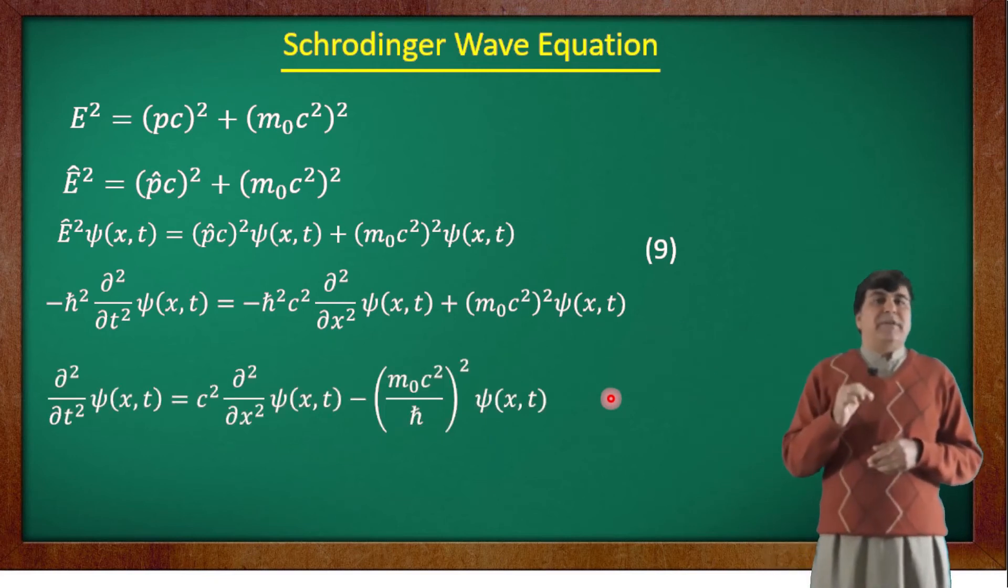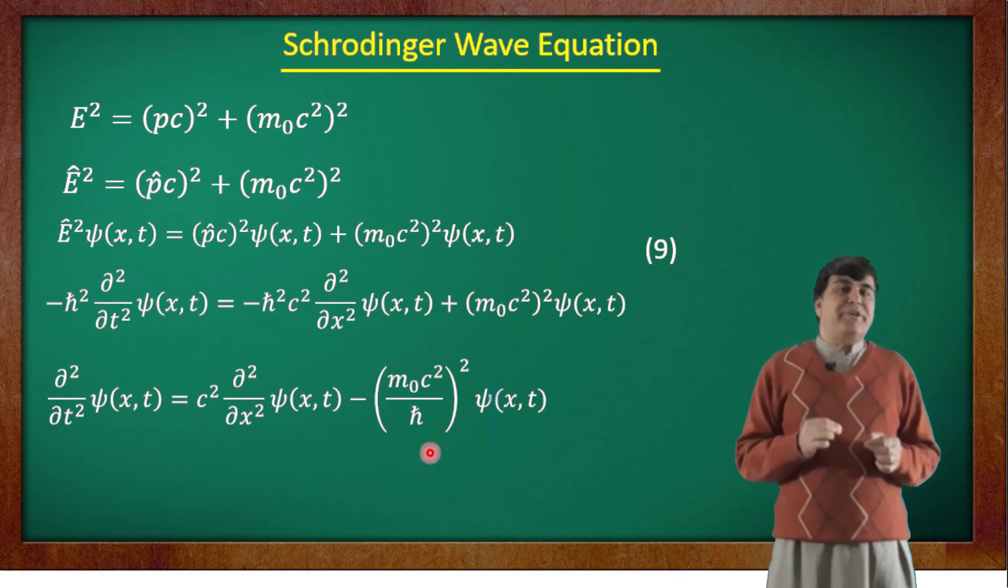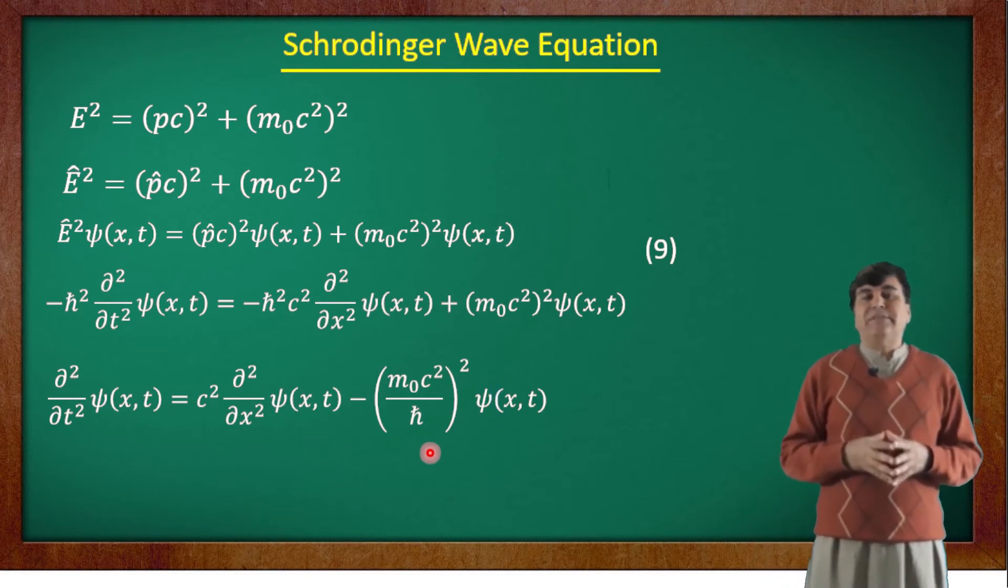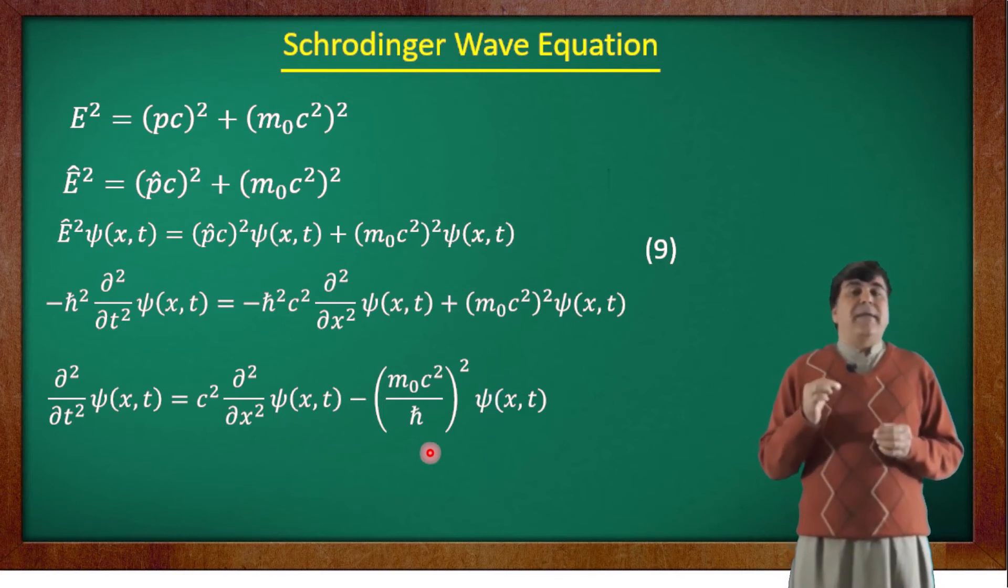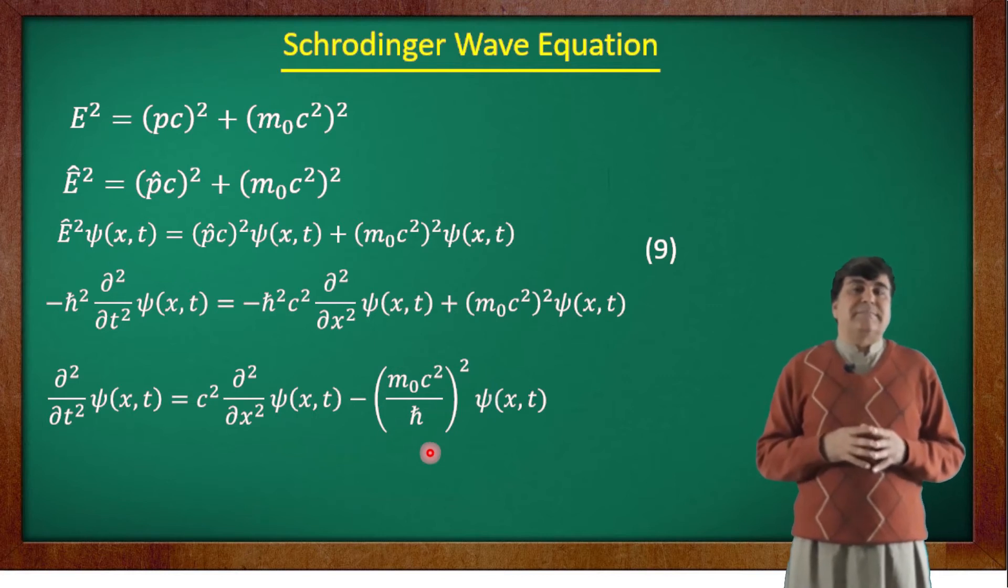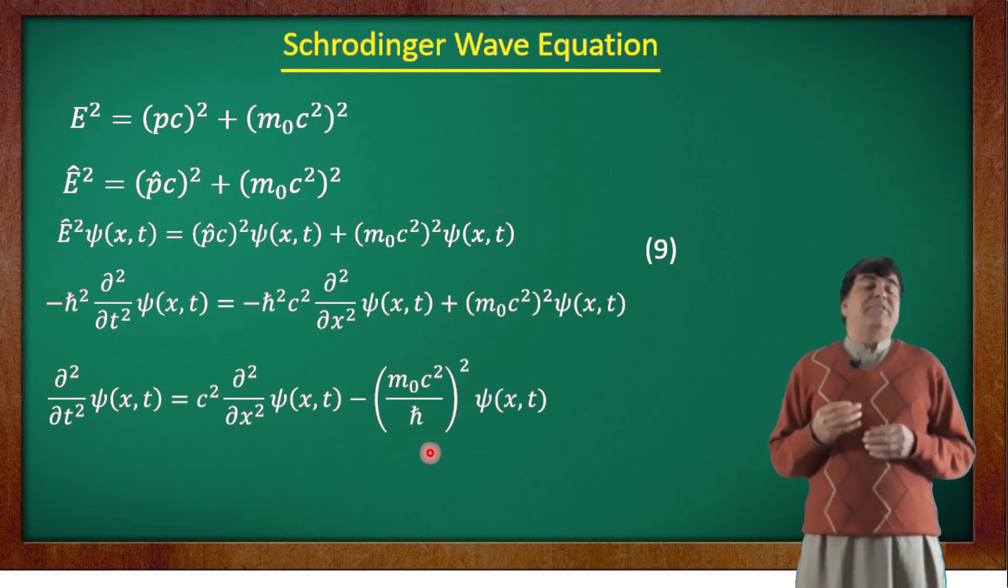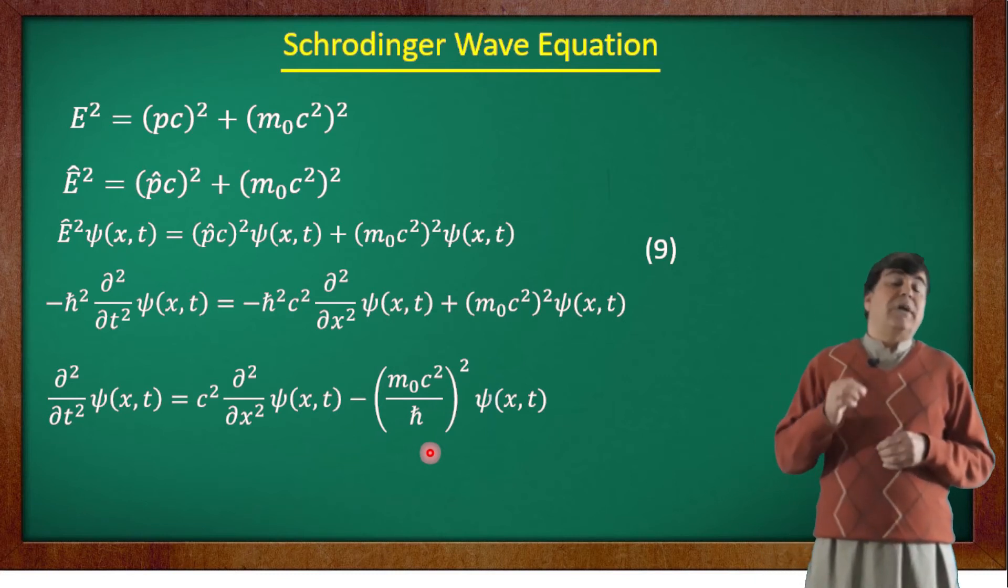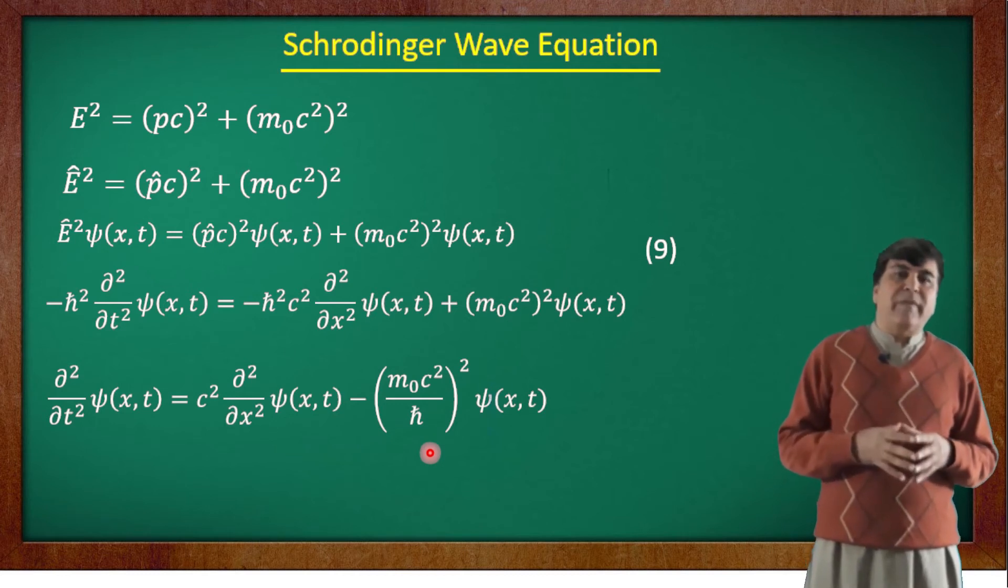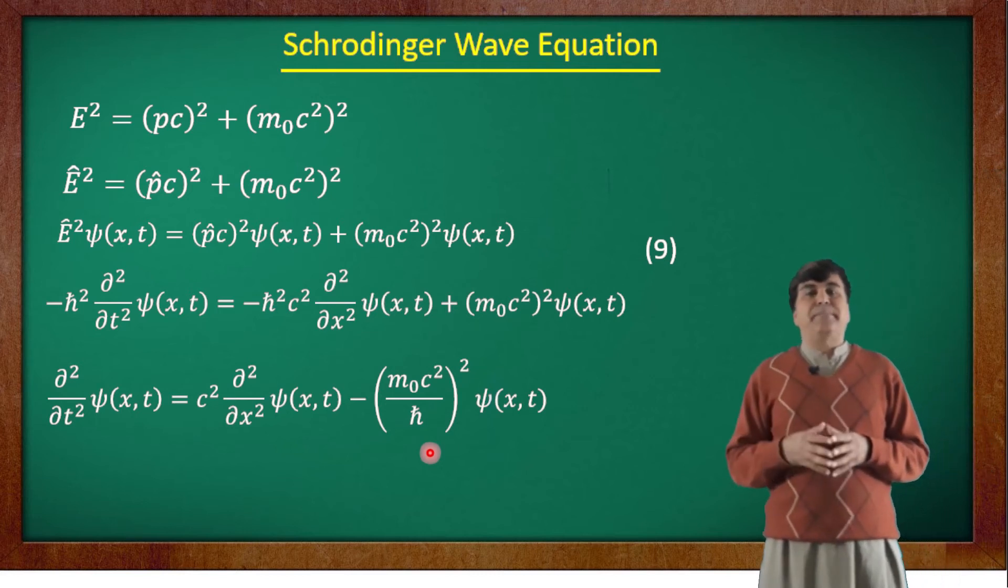However, the probabilistic interpretation of this equation leads to a conceptual difficulty: it results in negative energy of the particles. This negative energy now has its interpretation in the form of the Klein-Gordon equation as the energy of antiparticles, but in Schrödinger's time it was a problem. Schrödinger quit working with this equation anymore and turned his attention to non-relativistic particles.